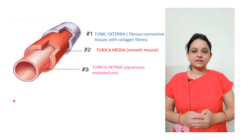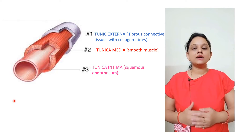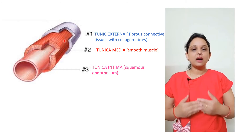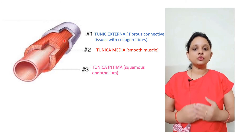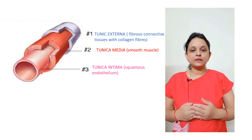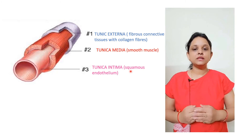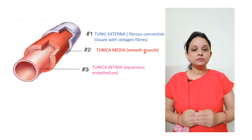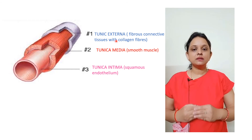Blood in our body flows in a fixed direction through blood vessels. Blood vessels like arteries and veins have three layers. Arteries have much thicker walls than veins because arteries carry oxygenated blood from the heart to the body organs and must bear the pressure from the heart. The innermost layer is the tunica intima, made up of squamous endothelium. The middle layer is the tunica media, made up of smooth muscles, which is very thin in veins. The outermost layer is the tunica externa, made up of fibrous connective tissue with collagen fibers.